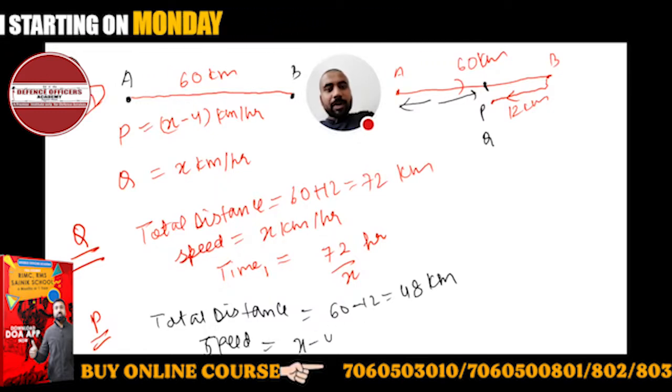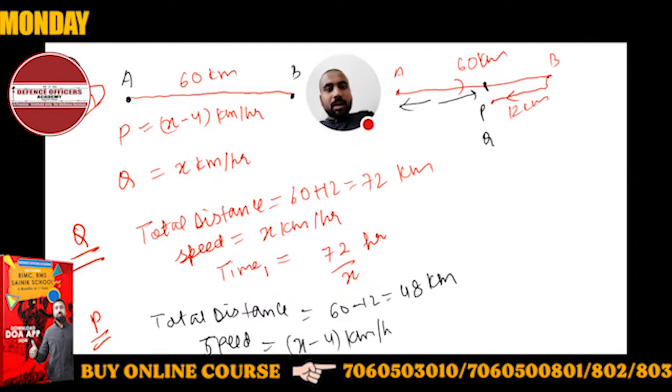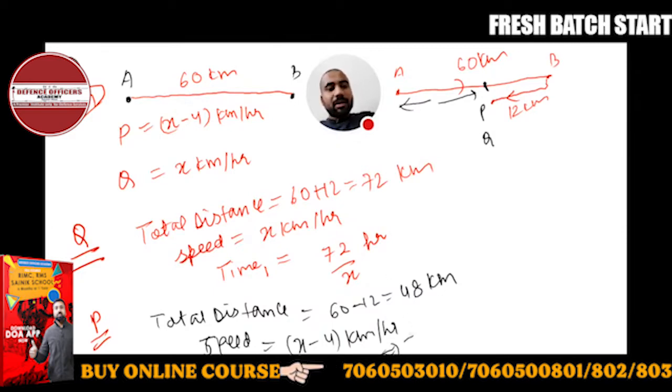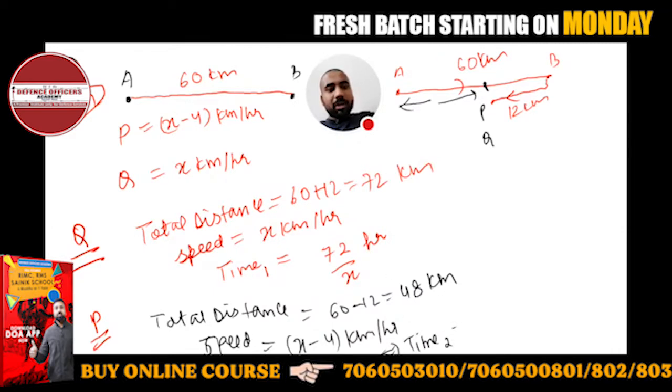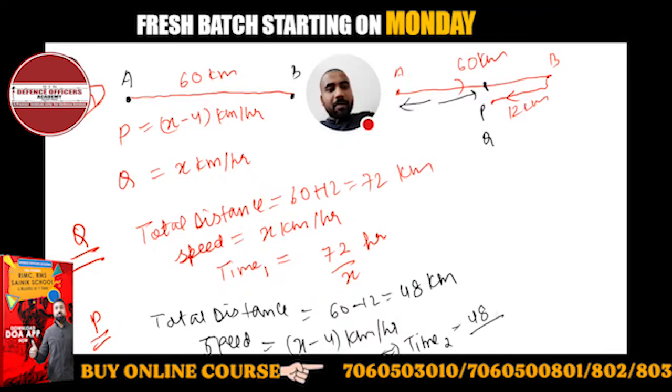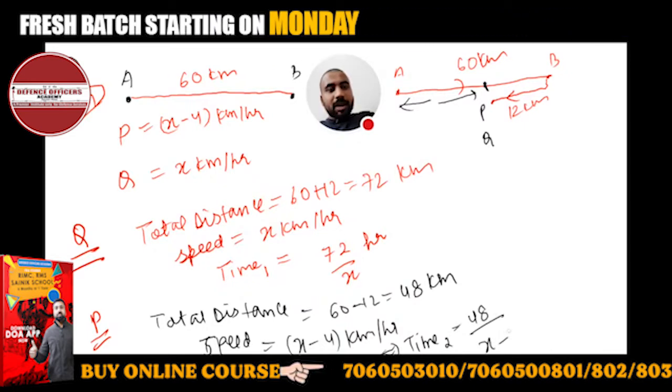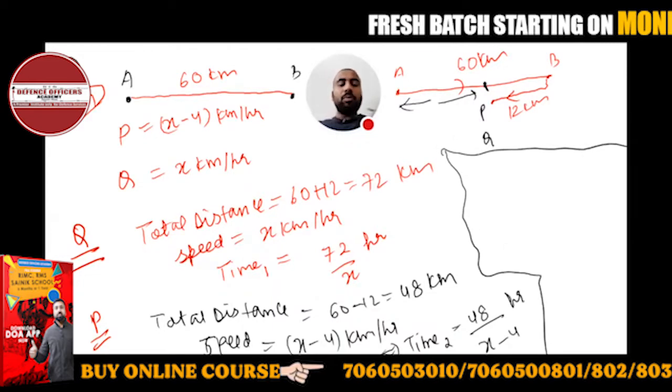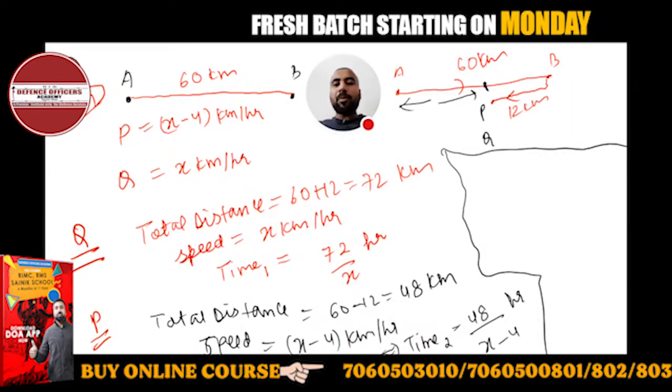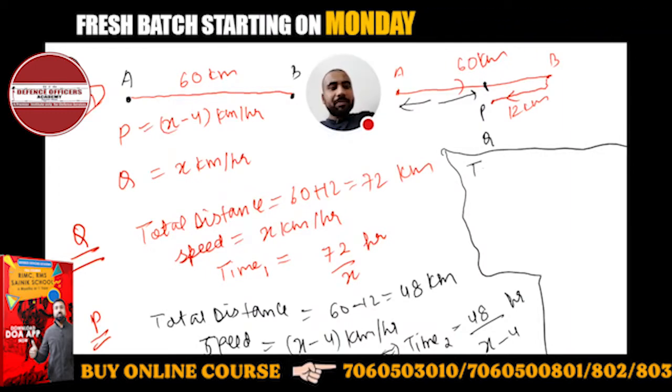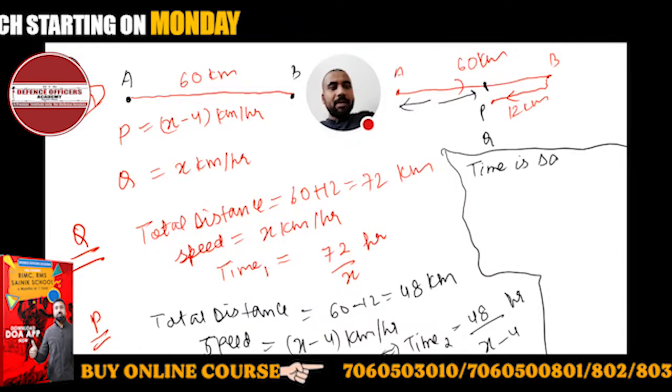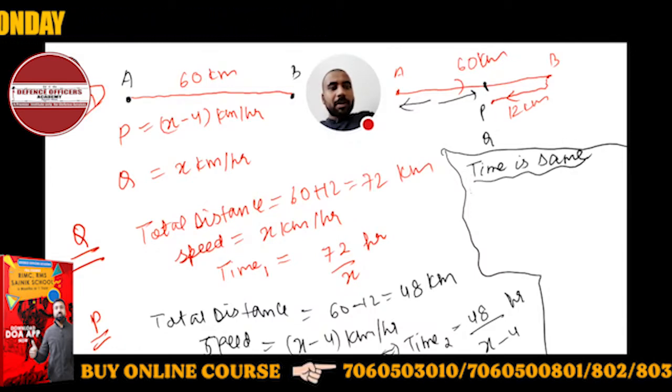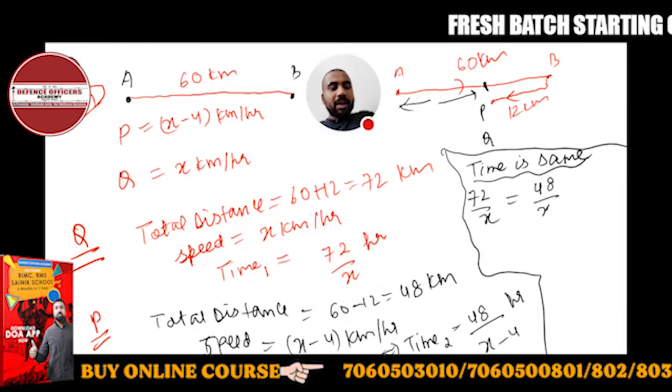So time for P is 48 upon x minus 4. The time taken by both is the same to reach that meeting point. So time is same for both. Since time is same, we can equate both times. This gives us 72 upon x equals 48 upon x minus 4.